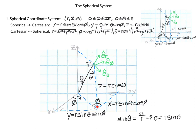The first triangle I'll work with has this 90-degree angle and angle theta. To find the length of the opposite side, I use sine of theta: sin(θ) equals opposite over r (the hypotenuse), so that opposite side equals r sin(θ).